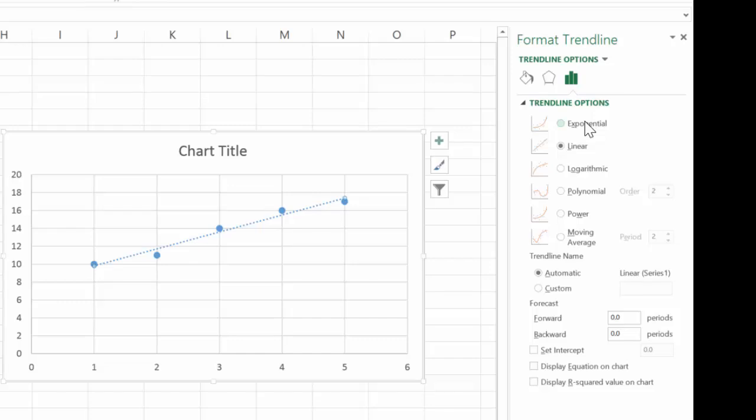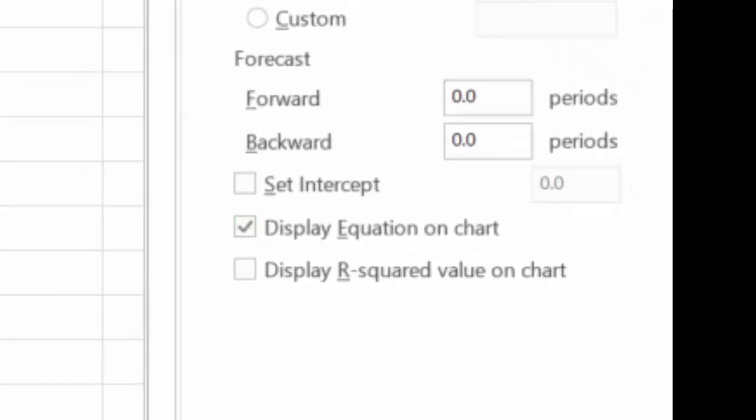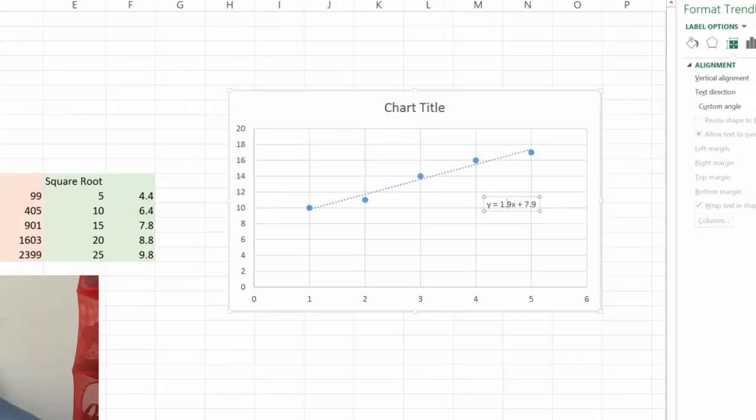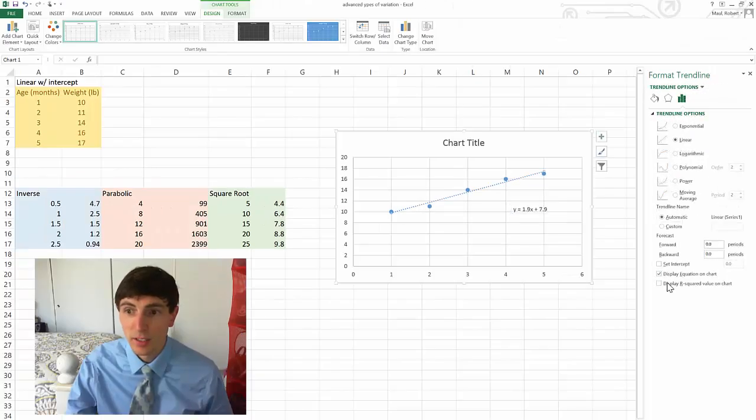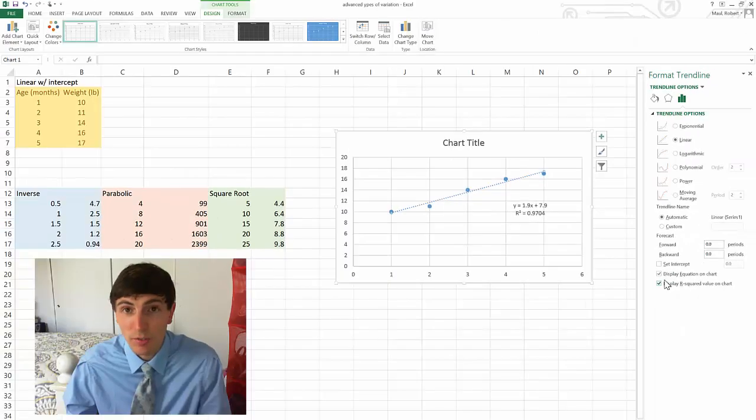So, what I want you to do is I want you to ignore exponential, ignore logarithmic, and ignore moving average. We're going to be primarily dealing with linear, polynomial, and the power function for the types of relationships we're going to be looking at. So, I look at this graph here, and I see it's linear. I'm also going to go down and click on Display Equation on Chart, and it's going to pop up an equation on there. And then I'm also going to click on Display R-squared Value on Chart, and that's going to be that correlation coefficient. The closer that number, R-squared, is to one, the better the model that you've chosen fits the data.